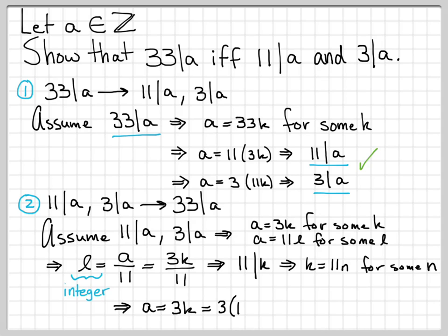I can write this as a equals 3k, back to that first equation. But k, we know, has to be written as some 11n, which is equal to 33n. And now I can see very clearly that a has a factor of 33. So a has to be divisible by 33. So that is the second part of the proof.